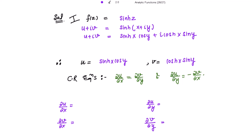The partial derivative of u with respect to x: since u = sinh(x)cos(y), differentiating with respect to x gives cosh(x)cos(y). The partial derivative of u with respect to y gives −sinh(x)sin(y). The partial derivative of v with respect to x: since v = cosh(x)sin(y), differentiating gives sinh(x)sin(y). And the partial derivative of v with respect to y gives cosh(x)cos(y).